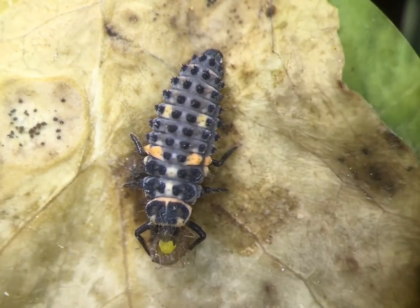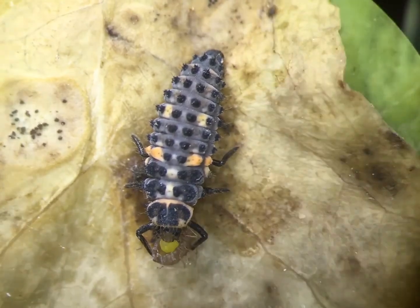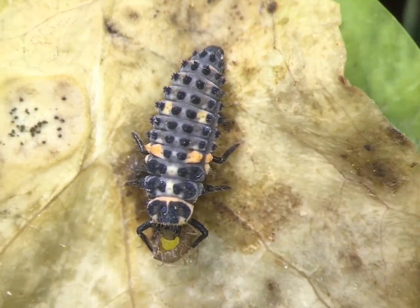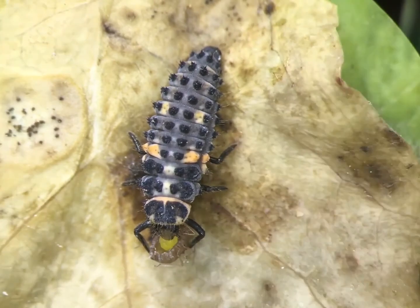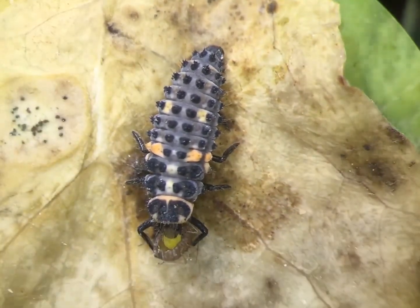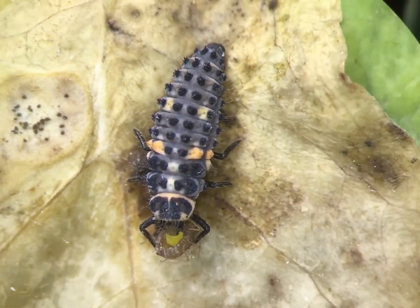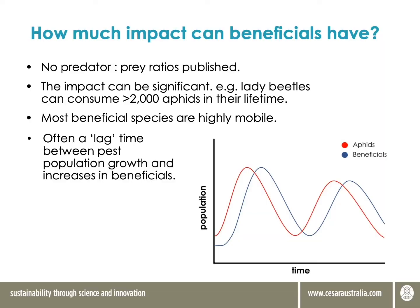We know that a single ladybird can consume more than 2,000 aphids in its life. Most beneficials are highly mobile, meaning they can move into a paddock and follow prey. Often what we see is a lag where beneficials move in after the pest has arrived — they need to be eating something, so they won't be there if there's nothing to eat. The trick is monitoring that lag time and estimating if beneficial populations will catch up, and if not, whether we need to intervene with some other control option.